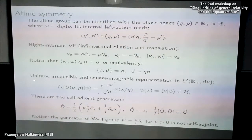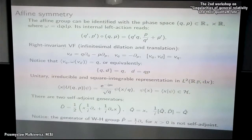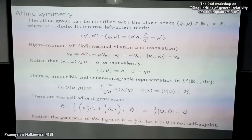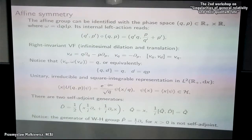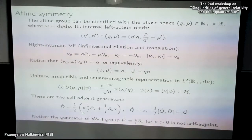Luckily, there exists a unitary irreducible and square-integrable representation — in the square-integrable sense I will explain shortly — in the space of square-integrable functions on a half-line of this group, given by a specific formula. There are two parameters Q and P, and two self-adjoint generators for this group: the dilation and translation in momentum, which is the position operator. They satisfy the corresponding algebra. Notice that one of the generators of the Weyl-Heisenberg group — the momentum operator — is not well-defined, i.e., not self-adjoint on the half-line, so it is replaced by another self-adjoint operator.